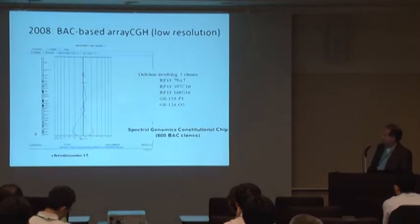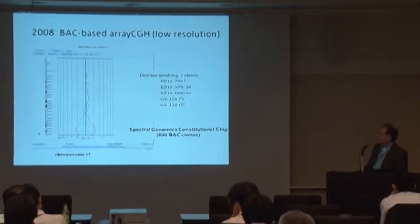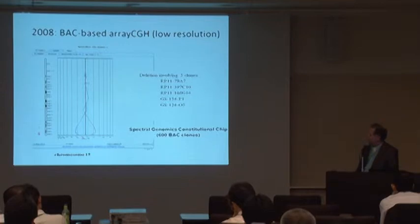The next platform we evaluated in-house was the Spectral Genomics BAC array. It had 600 BACs and you can see this one clearly shows a five clone deletion on chromosome 15. It wasn't bad but it doesn't have a lot of coverage, not very dense, and really wasn't very practical for our clinical use for our patients.